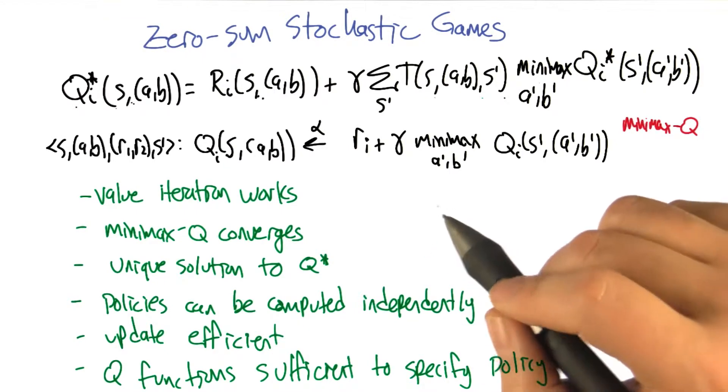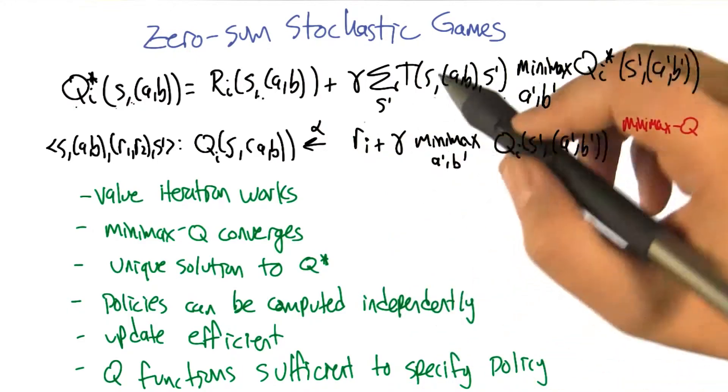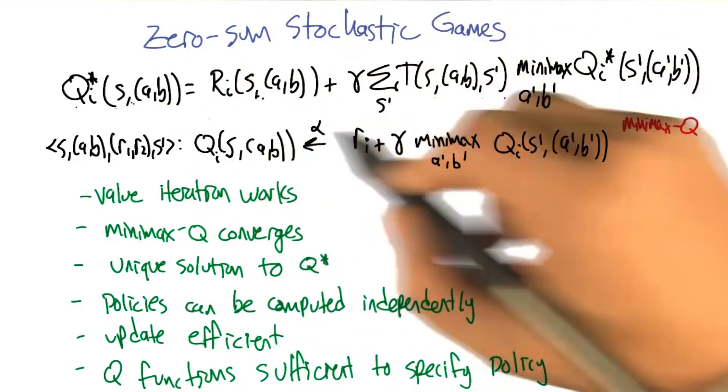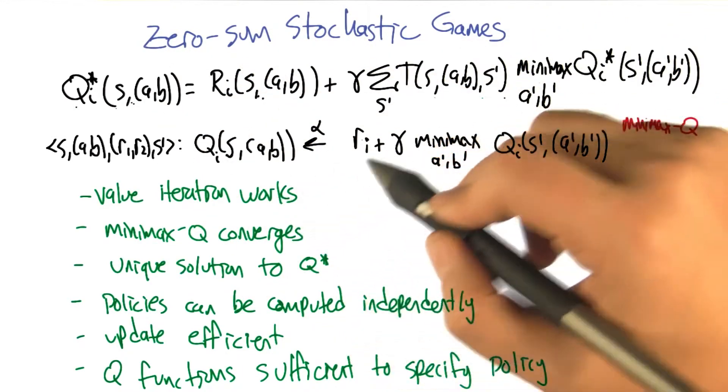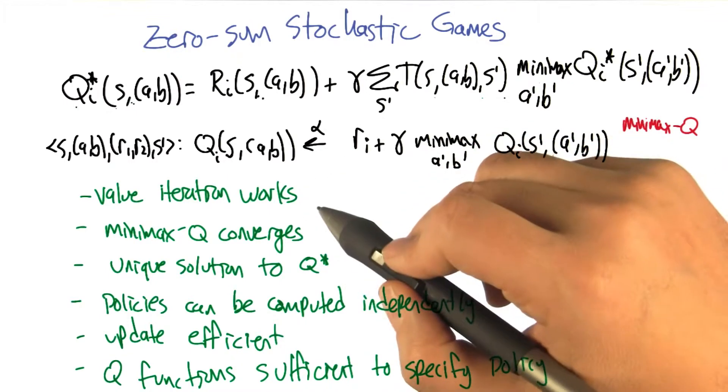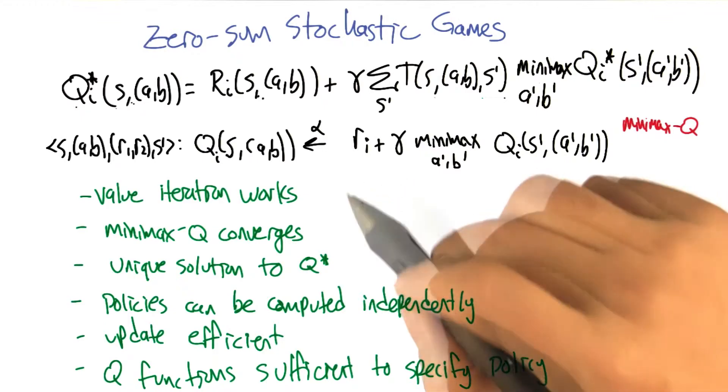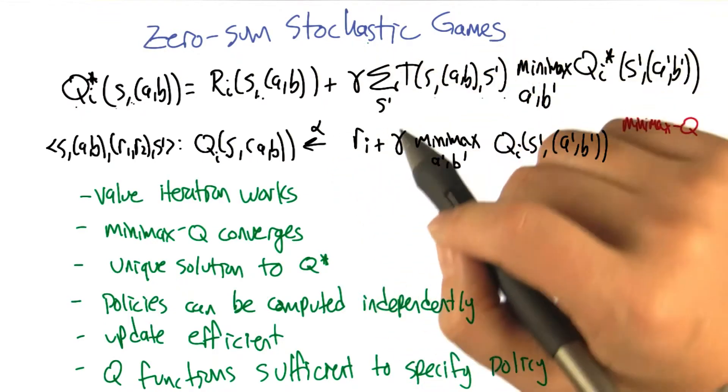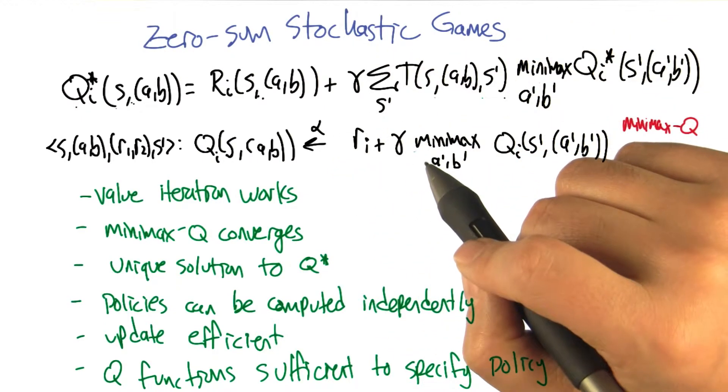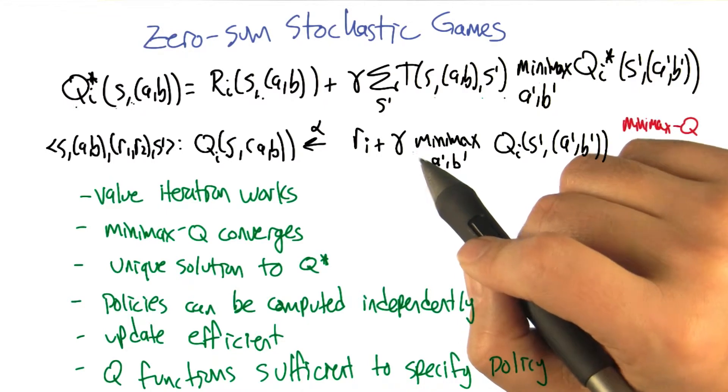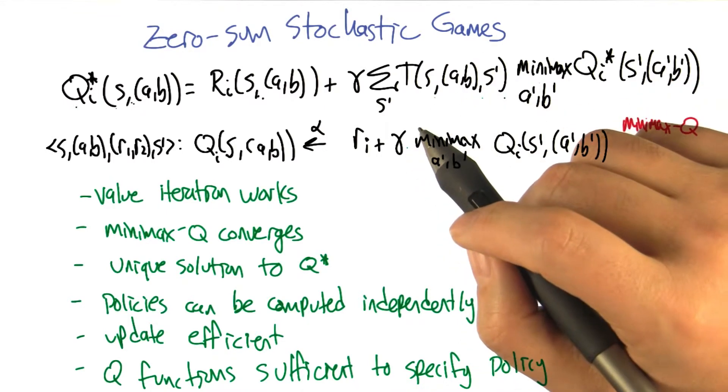For example, in the case of an MDP, we can solve these system of linear equations in polynomial time. Not just by value iteration, but we can actually set it up as a single linear program and solve it and be done in linear time. Or sorry, not linear time, polynomial time. This is not known to be true in the zero sum stochastic game case. It's not known whether it can be solved in polynomial time.